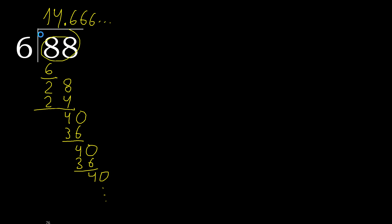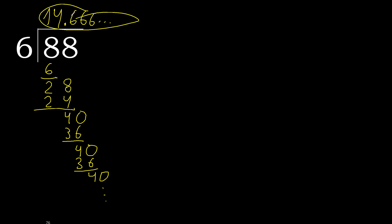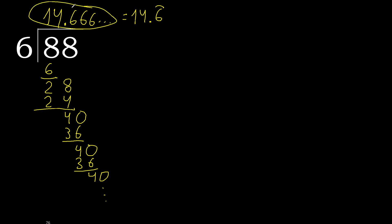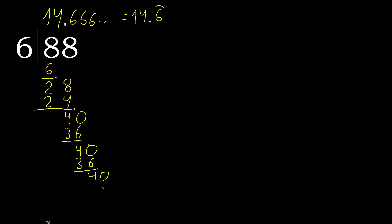88 divided by 6 gives us 14, and after the decimal point, 6 repeats. The answer can be written as 14.6 repeating, like this — 14.666... or with a repeat notation over the 6.